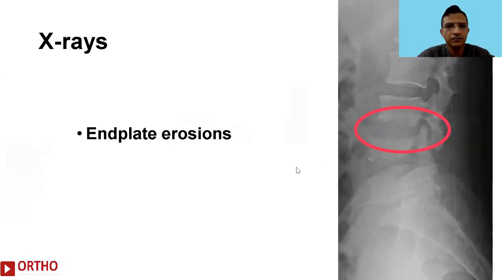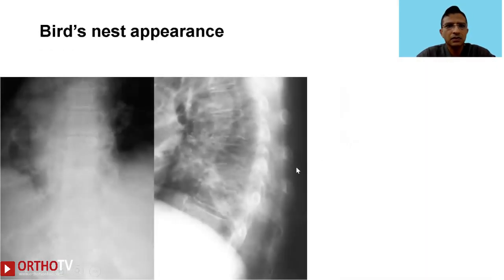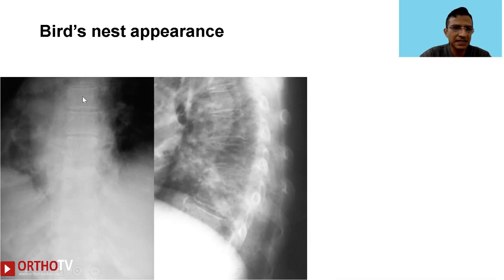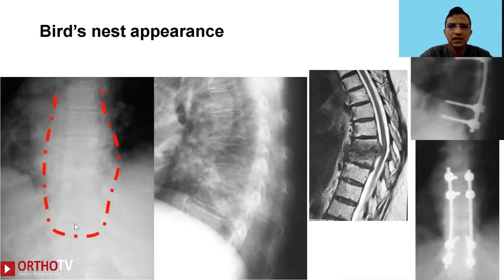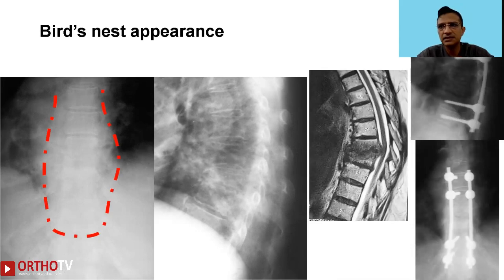In a later stage we would see changes like end plate erosions as seen here. There are also certain other features visible on x-rays — there is this bird's nest appearance as we can see on the anteroposterior x-ray, which is indicative of a paraspinal abscess and may require surgical intervention as seen here.